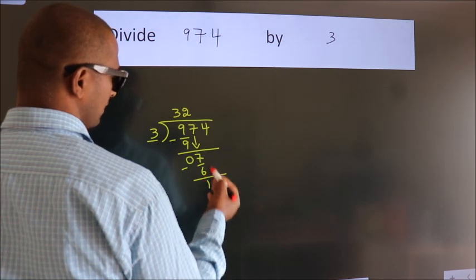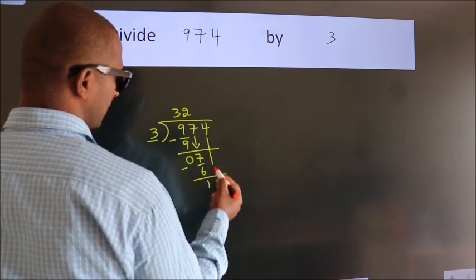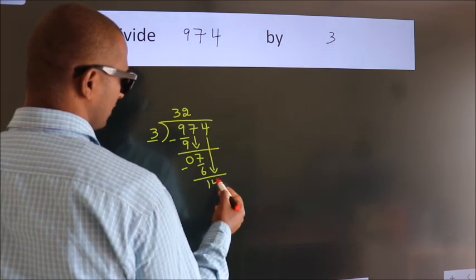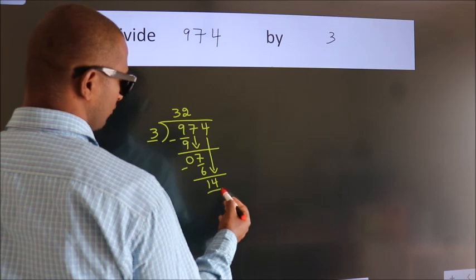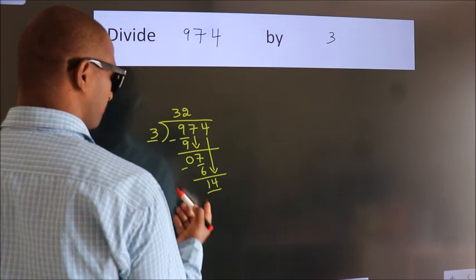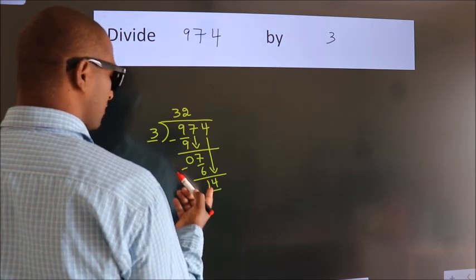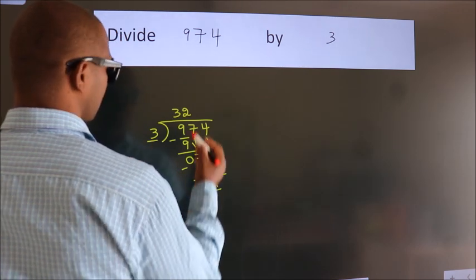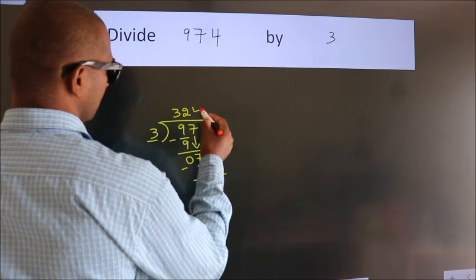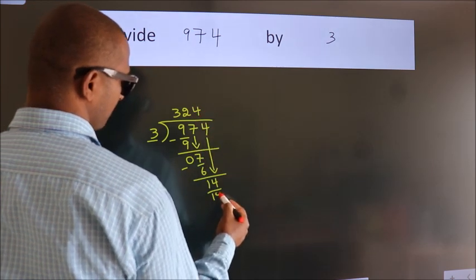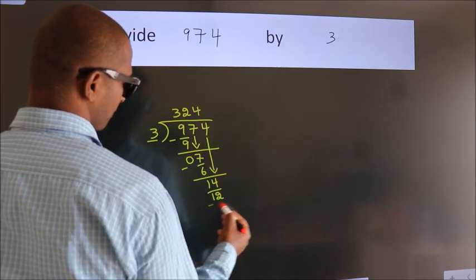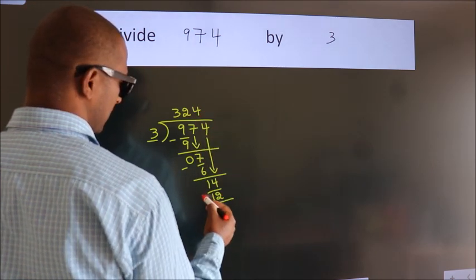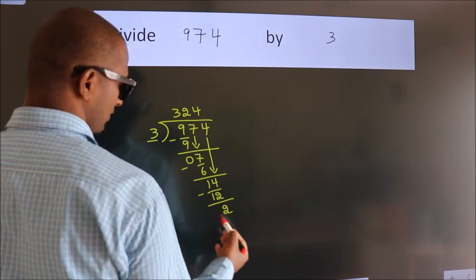After this, bring down the beside number. So 4 comes down — so 14. A number close to 14 in the 3 times table is 3 times 4 is 12. Now we subtract. We get 2.